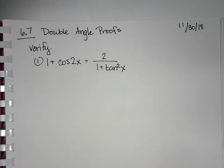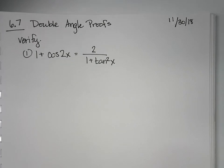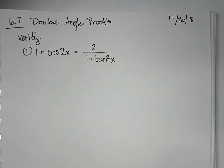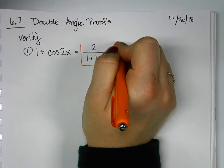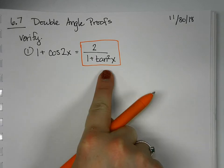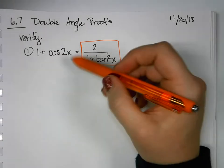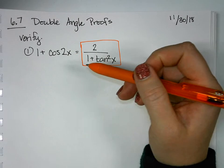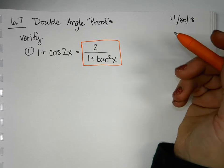Just like our proofs from previous units, we pick a side to work with and pick a side that we try to match. On this one I'm going to try to match the right side, so I'm going to work the left side to get it to look like the right. I know I have a cosine double angle and I have to think which form do I want. Again, we have three forms of this one.